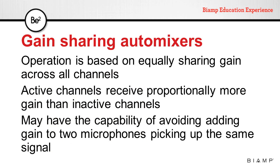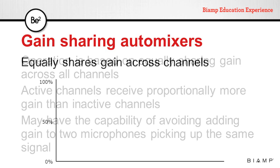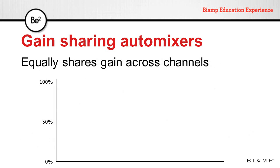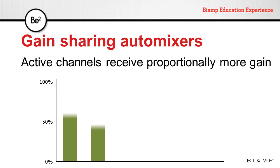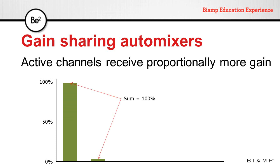When a channel becomes active, it will receive proportionally more gain than inactive channels. These mixers may have the capability of avoiding adding gain to two microphones that are picking up the same signal. If we had two microphones connected to a gain sharing automatic mixer but none of them were being used, both would receive the same amount of gain. When one microphone becomes active, more gain will be applied to that channel while gain is reduced to the other. The sum of the gain applied to all microphones is still the total available gain.